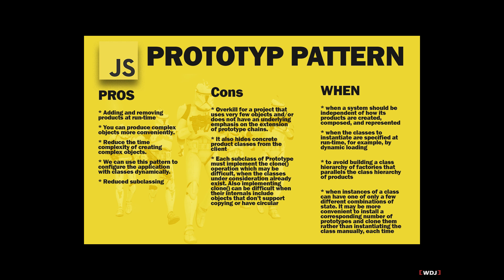Another pro is reducing the time complexity of creating complex objects — if it's a complex object, you won't waste as many resources or as much time. We can also use this pattern to configure the application with classes dynamically. And it reduces subclassing: the prototype pattern lets you clone the prototype instead of asking a factory method to make a new object, so you don't need a creator class hierarchy at all.